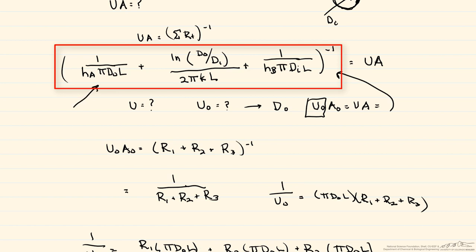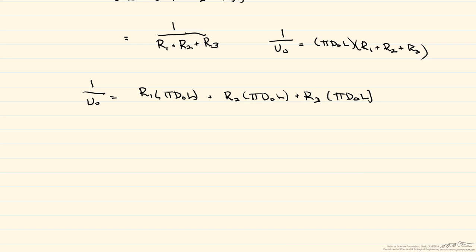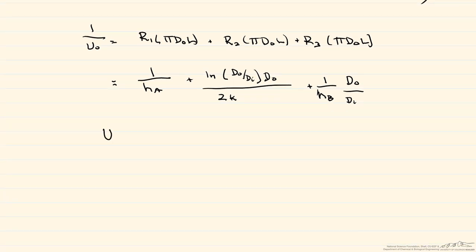...that a number of these values will cancel out. And what we're left with is 1 divided by our H sub A plus the natural log, and again we have this ratio, the diameters times, and everything else here will cancel out, plus, and now we have 1 over HB times the ratio of these diameters. And so if we want to actually find our outside heat transfer coefficient, we just take this entire expression, solve for it, and take the reciprocal of it.